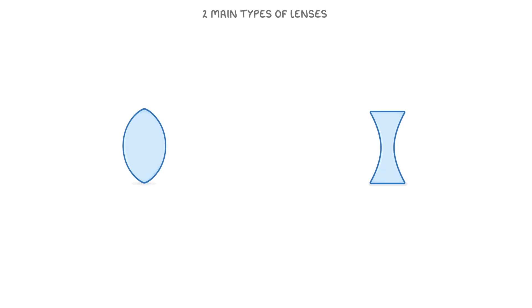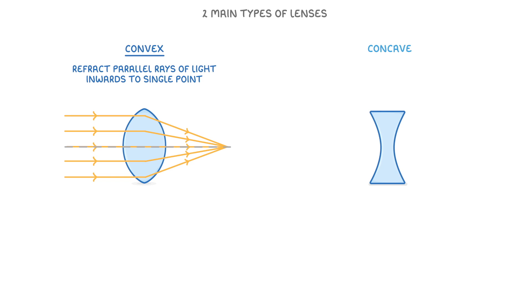Now, as we can see here, there are two main types of lenses, convex and concave. Convex lenses have an outwards bulge in the centre, which causes them to refract parallel rays of light inwards to a single point, which we call the principal focus.